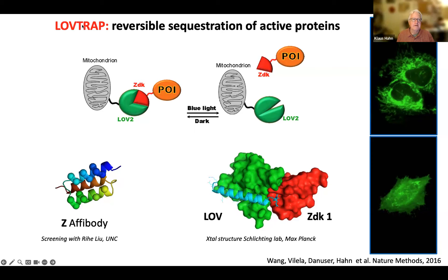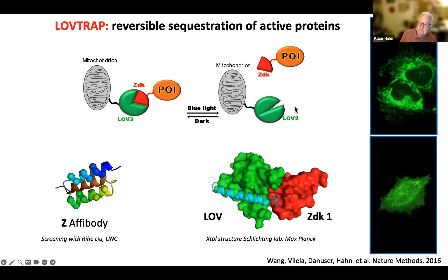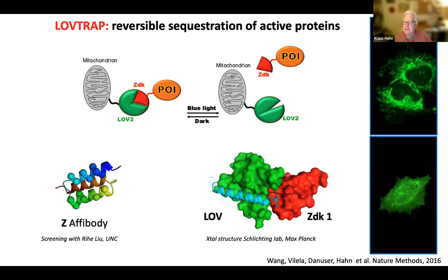The next tool is the LOV trap. We took an affibody — a small screenable scaffold derived from protein kinase A — and did screening to find a version that binds only to the dark state, not the lit state, of LOV. This is our Z-dark construct, and the crystal structure from Ilma Schlichting shows it grabbing the end of the helix and a little portion of the globular domain. The basic concept is you anchor LOV at the mitochondrion, then put this Z-dark on either terminus of your protein of interest. When you irradiate, it falls off — in the dark it's sequestered on the mitochondria, and when the blue light goes on, it moves back and distributes everywhere.